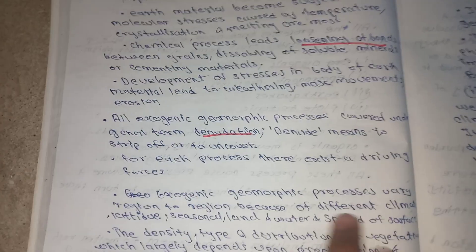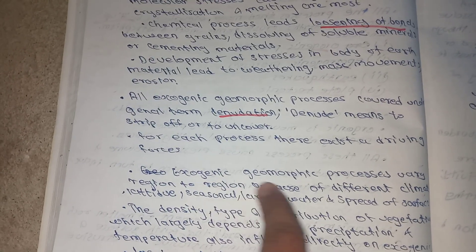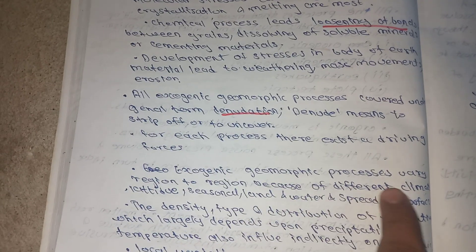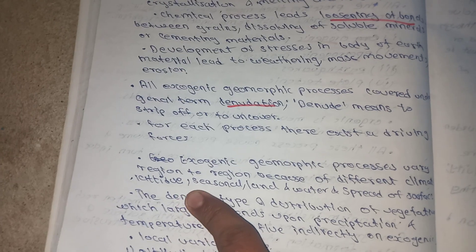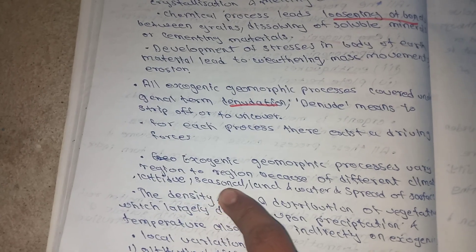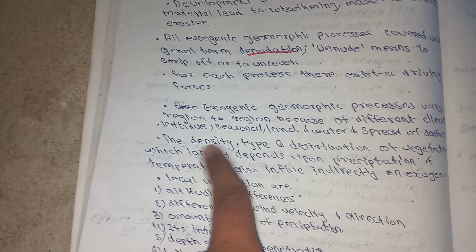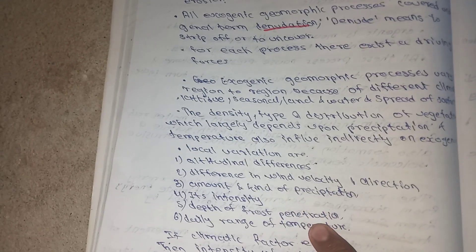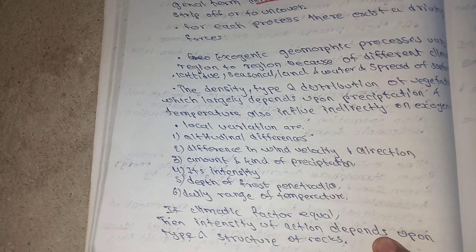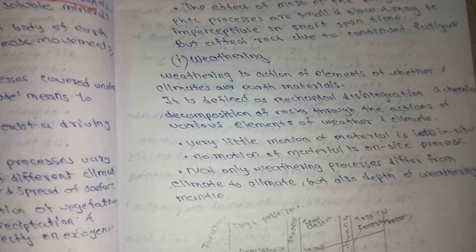Exogenic geomorphic processes vary from region to region because of differences in climate, latitude, seasonal variation, and the spread of land and water surfaces. Here you can see some key points on this.